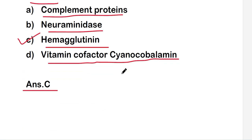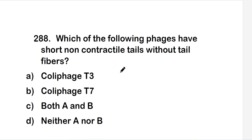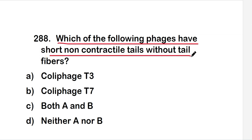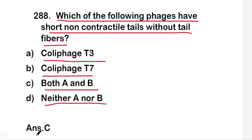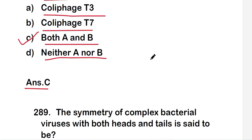Next question: which of the following phages have short non-contractile tails without tail fibers? Options are phage T3, phage T7, both A and B, or neither A nor B. The right answer is option C, both A and B. Phage T3 and phage T7 both have short non-contractile tails without tail fibers.